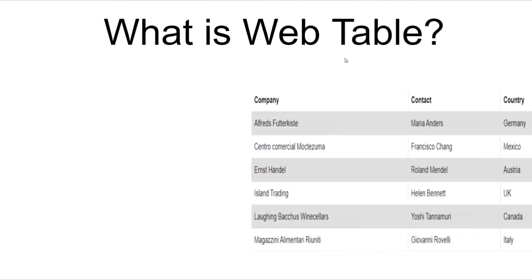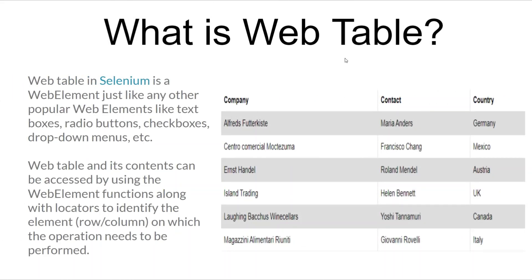Let us first understand what is a web table. A web table is a table on a web page where your data is being represented in tabular format with the help of rows and columns, where each cell is represented by some row number and column number. In Selenium, a web table is simply a web element and we will be performing web element functions in order to access the content of that table.